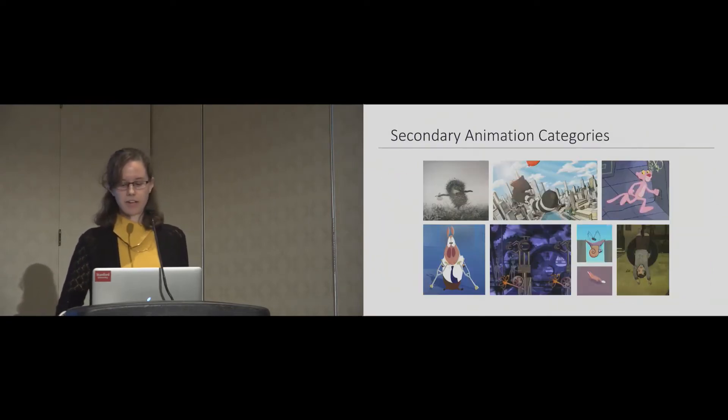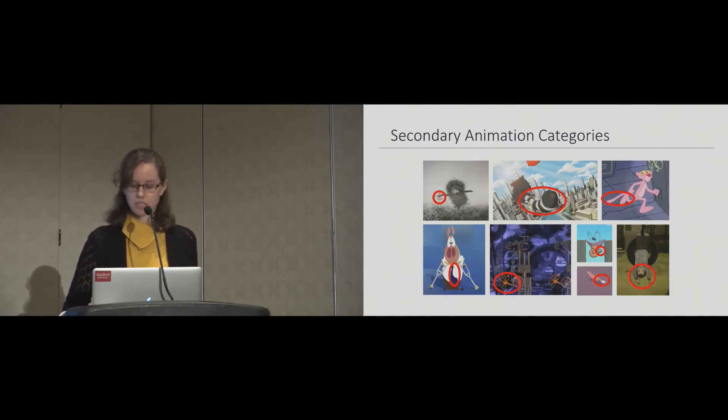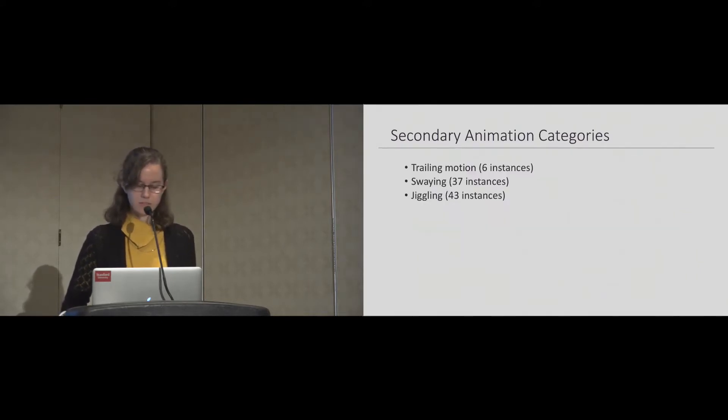To better understand the variety of secondary motion that animators typically apply to 2D illustrated characters, we curated a set of 29 short animations created using a layer-based approach. These examples are between 30 seconds and 12 minutes long and include short films, advertisements, TV series, and promotional videos. For each animation, we identified all instances of secondary motion. We found a total of 86 instances of secondary animation that were mostly applied to tails, clothing, hair, large appendages such as ears, and hanging objects such as necklaces and ties.